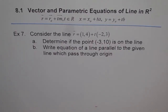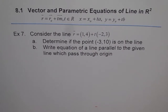Example 7. Consider the line R = (1,4) + T(-2,3). Determine if the point (-3,10) is on the line. Write the equation of a line parallel to the given line which passes through the origin.